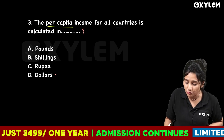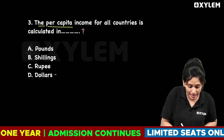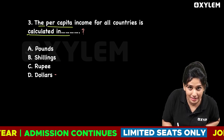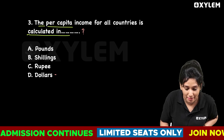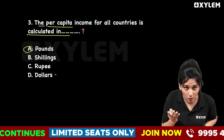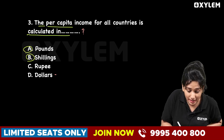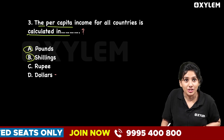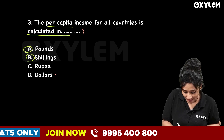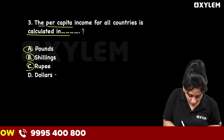Third question: The per capita income for all countries is calculated in dash. Option A: Pounds. Option B: Shilling. Option C: Indian Rupee. Option D: Dollars.